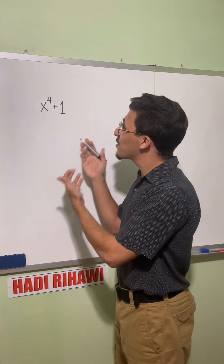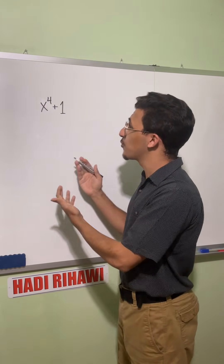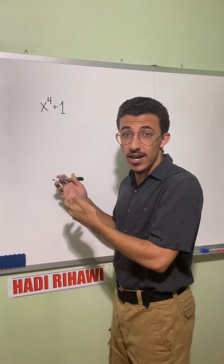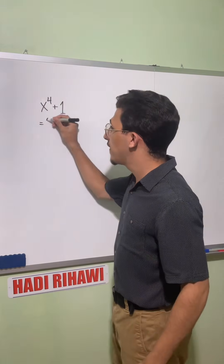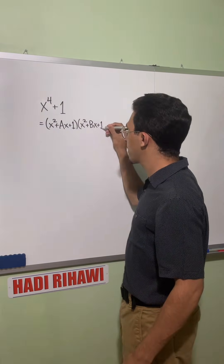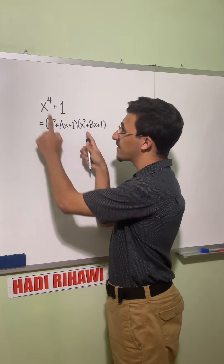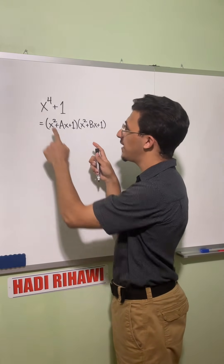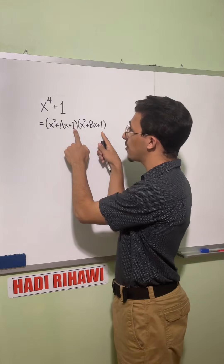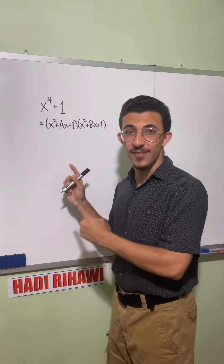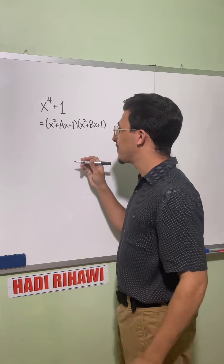Since this function is strictly positive on the reals, we know it has no real roots. So we know if it does factor, it has to factor into two quadratic terms. Multiplying the two x-squared terms gives us our x to the fourth with a coefficient of one, and then multiplying our constant terms gives us the one at the end. So this is a fine way to write the two quadratics that this might reduce into.